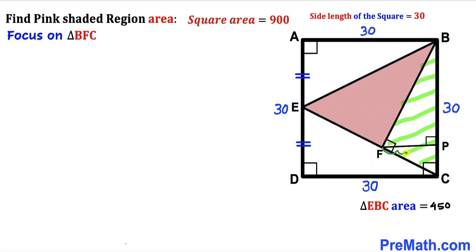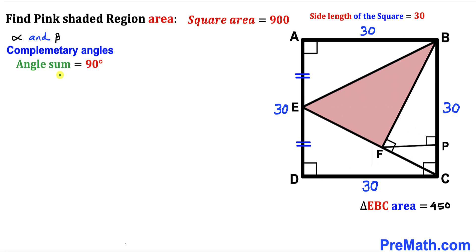Let's focus on white triangle BFC. In the next step, I drop a perpendicular FP onto side BC. We can see that FP is the height of white triangle BFC and the base of triangle BFC is 30. Therefore, our task is to find the length FP in order to calculate the area of triangle BFC.